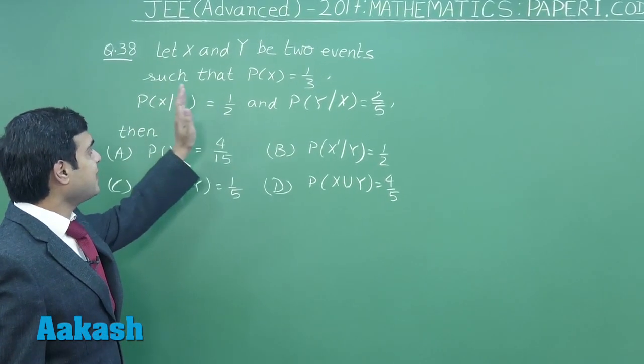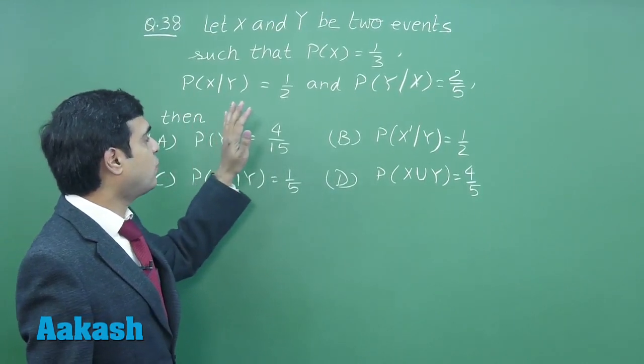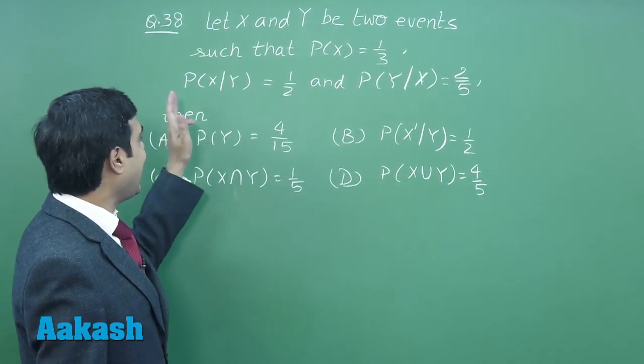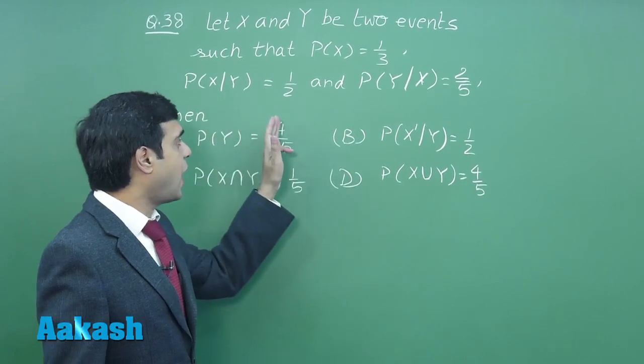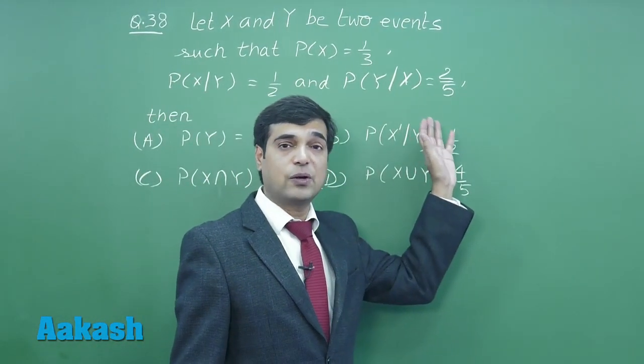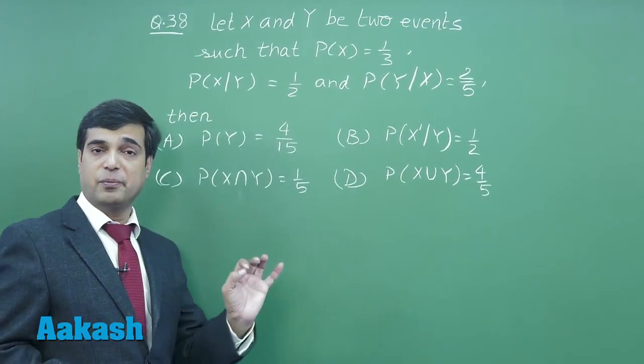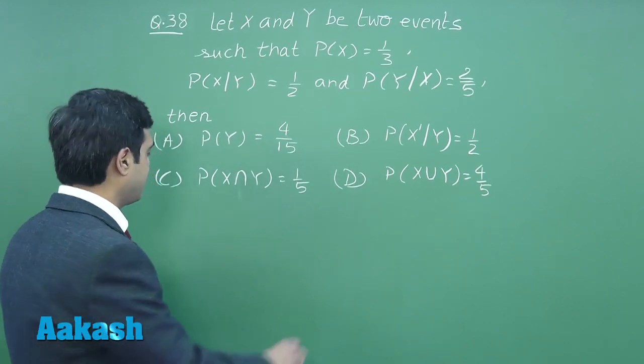Let's take the next question, that is question number 38. Let X and Y be two events such that P(X) = 1/3, P(X|Y) = 1/2, and probability of Y given X has already occurred equals 2/5. Four options are given based on the simple information given to us. Let's start this question.